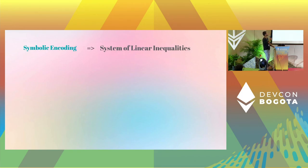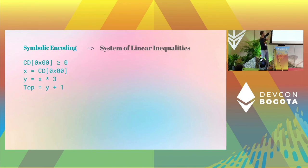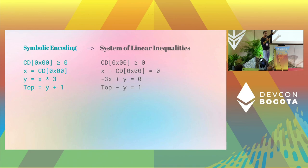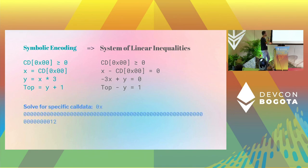Why do we want to do this? Our symbolic encoding turns into a system of linear inequalities. Equalities can be quickly translated into inequalities — we keep them as equalities for simplicity. We know how to solve these with algorithms from high school or university. We can, for example, give a concrete call data and run it symbolically.